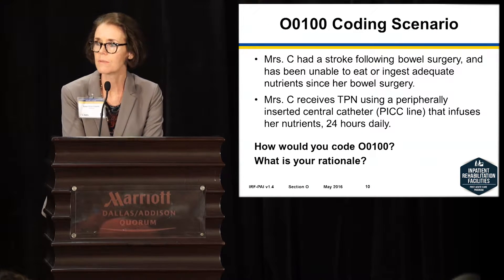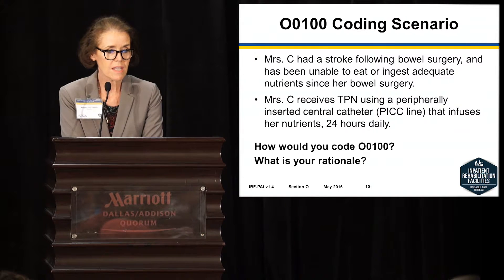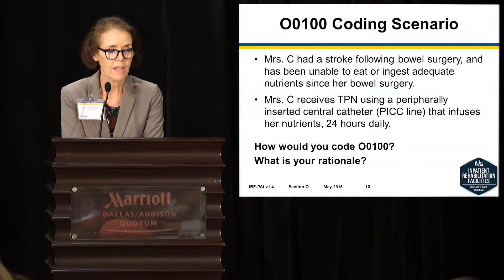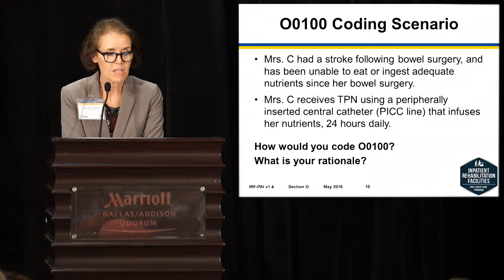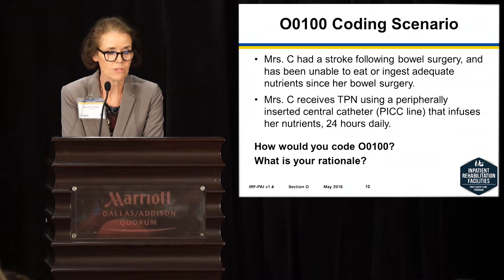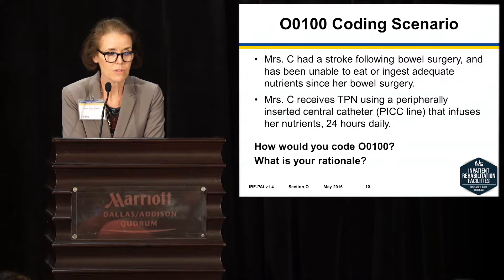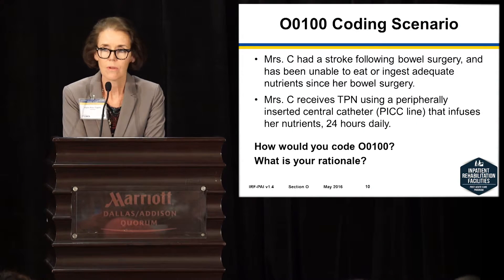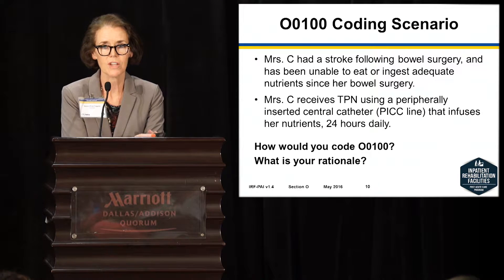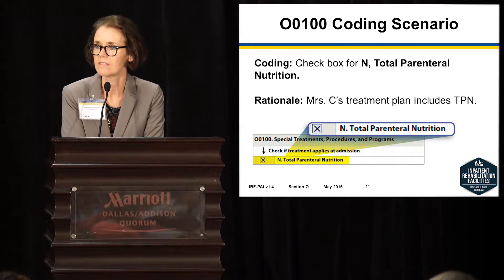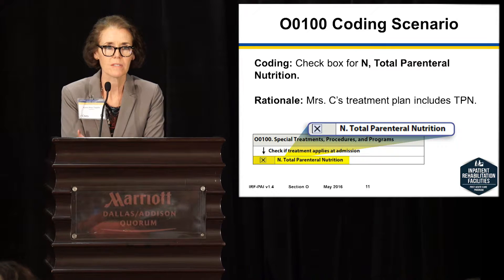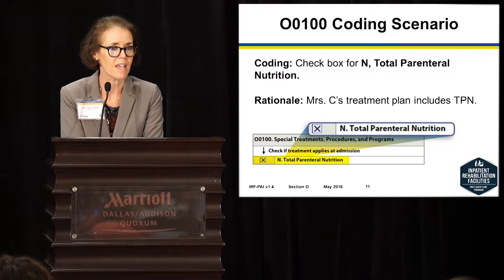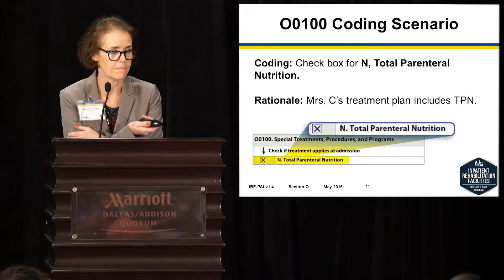It's one of the few items you can actually leave blank. So let's do a coding scenario — pretty straightforward. Mrs. C had a stroke following bowel surgery and has been unable to eat or ingest adequate nutrition. She receives TPN using a peripherally inserted central catheter, or PICC line, that infuses her nutrients 24 hours a day. How would you code O0100? You put the check. So it's new, but pretty straightforward.